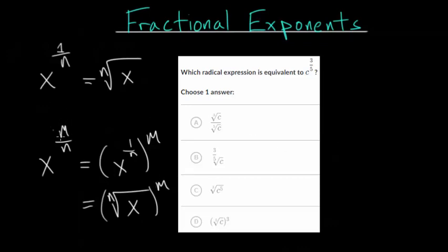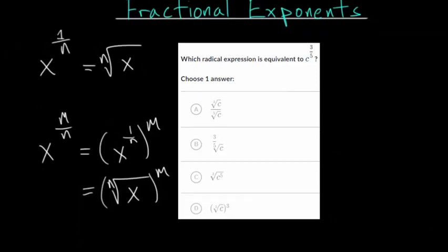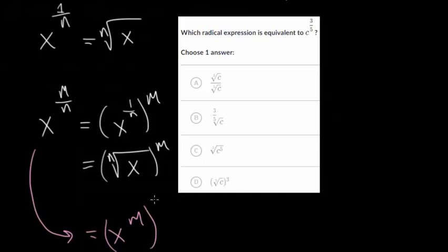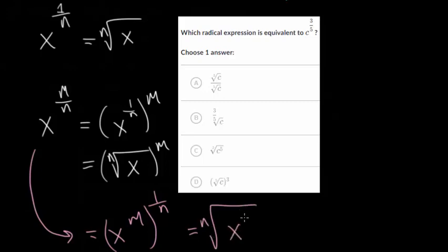So the numerator is whatever power we're going to raise our number to after we've taken the nth root. But you could also look at it the opposite way, where we have x to the m power all raised to the 1 over n power. So we have x to the m, and we're taking the nth root of it — giving us the nth root of x to the m. You can write it either way.